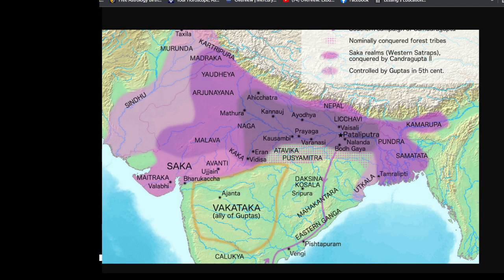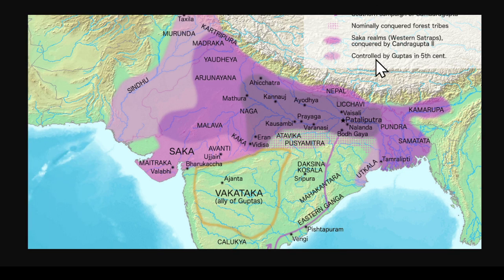Moving on to the next subsection of Toynbee's study of history. We're looking at a map as he moves on to India, going from west to east, commenting on and analyzing the living civilizations, then going back to see if they are affiliated to a mother civilization. We've seen what happened with Islamic society as the result of a fusion between Iranic Islam and Arabic Islam, both affiliated back to the Syriac society.